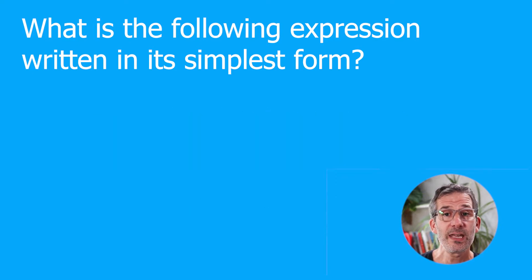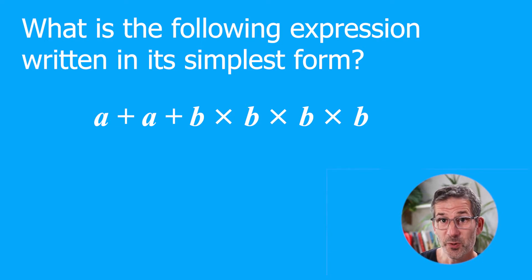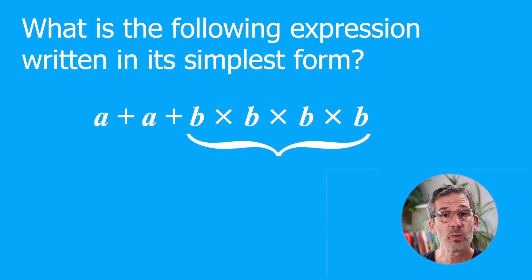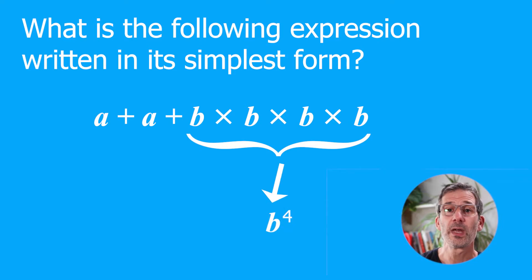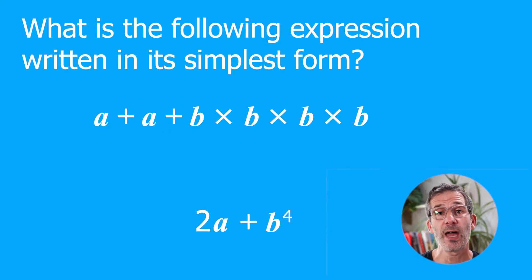So if you had something like A + A + B × B × B × B × B, it's important to read carefully because some terms are being added and some multiplied. The multiplication part simplifies to B to the power of 4, and the addition part simplifies to 2A. So the whole thing is 2A + B⁴.